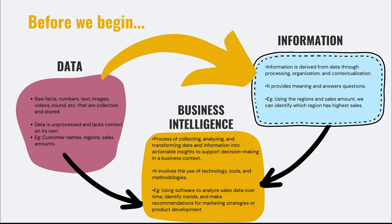You have to transform it, and that process leads to information. Information is derived from data through processing, organization, and contextualization. It provides meaning and answers your questions. For example, if you want to track the sales amount for a particular region, see how many stores are around you, or which store is selling at the cheapest price — that is the information you get out of that data.